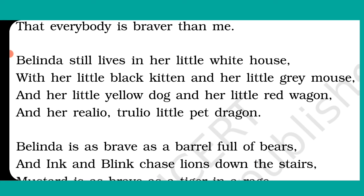Valinda still lives in her little white house with her little black kitten and her little grey mouse and her little yellow dog and her little red wagon and her realio trulio little pet dragon. The poet uses the same lines again to show that after this terrific episode in which the dragon was the hero, all the other characters still undermined him by saying they were more powerful. Life started again in the same manner, with all of them claiming to be very brave, whereas the dragon is still considered a coward.